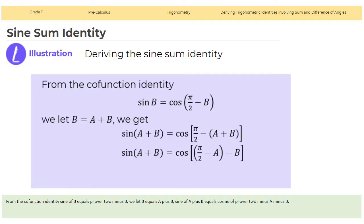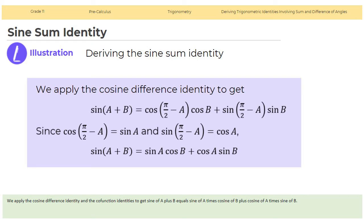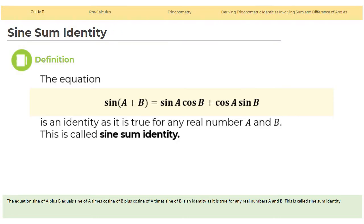Sine sum identity. Deriving the sine sum identity: from the co-function identity, sine b equals cosine(pi over 2 minus b). We let b equal (a plus b), so sine(a plus b) equals cosine(pi over 2 minus a minus b). Applying the cosine difference identity, we get sine(a plus b) equals cosine(pi over 2 minus a) times cosine b plus sine(pi over 2 minus a) times sine b. Since cosine(pi over 2 minus a) equals sine a and sine(pi over 2 minus a) equals cosine a, then sine(a plus b) equals sine a cosine b plus cosine a sine b. This is called the sine sum identity.